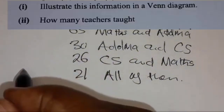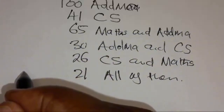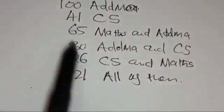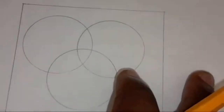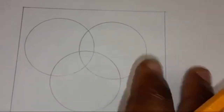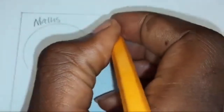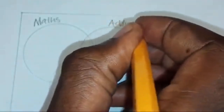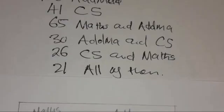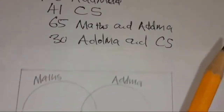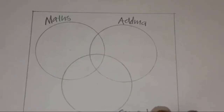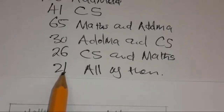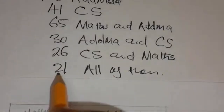Part A: they are saying illustrate this information in a Venn diagram. So this is the Venn diagram we are going to use. We have three sets: Maths, ADMA, and Computer Science. The first thing you are going to do is feed the Venn diagram the number of teachers that taught all the subjects — in this case, 21.